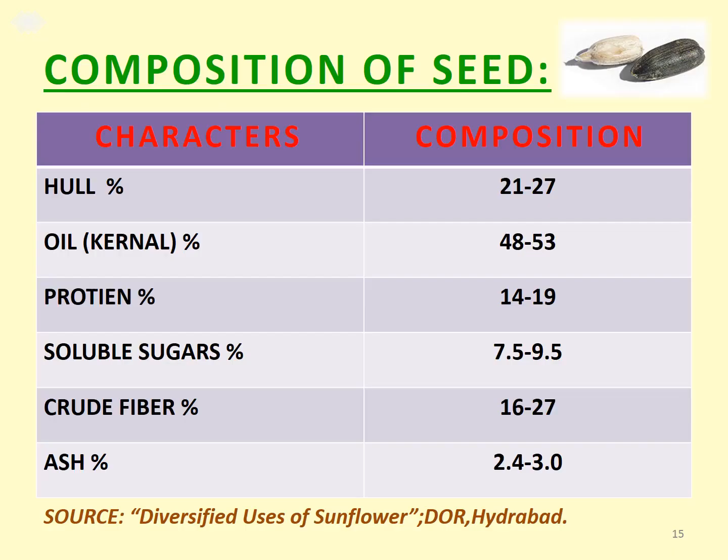Regarding the composition of the seed — the biochemical aspect — the hull composition is around 21 to 27%, kernel oil is 48 to 53%, protein is 14 to 19%, soluble sugars around 8 to 10%, crude fiber 16 to 27%, and ash content of 2.4 to 3%.